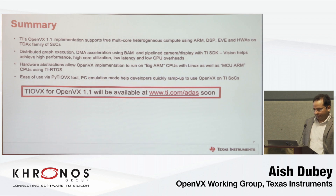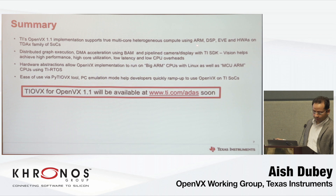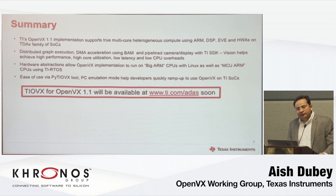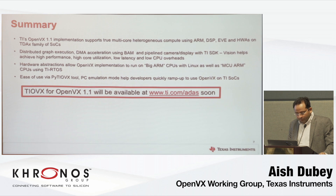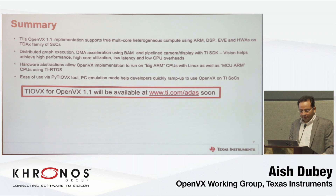In summary: TI-OVX will be available on the web page soon — weeks rather than months. The implementation supports multi-core heterogeneous compute using ARM, DSP, EVE, and purpose-built hardware accelerators. It supports distributed graph execution, DMA acceleration, and pipeline camera display with support from TI-SDK-based components. Hardware abstractions allow it to run on any ARM CPU under Linux or RTOS. Development can be done on PC, debugged there, then seamlessly run on the target.